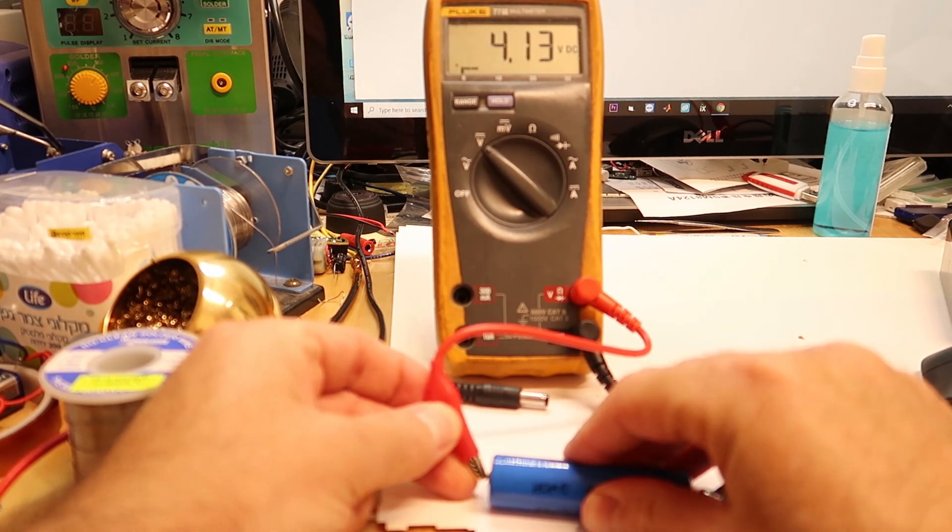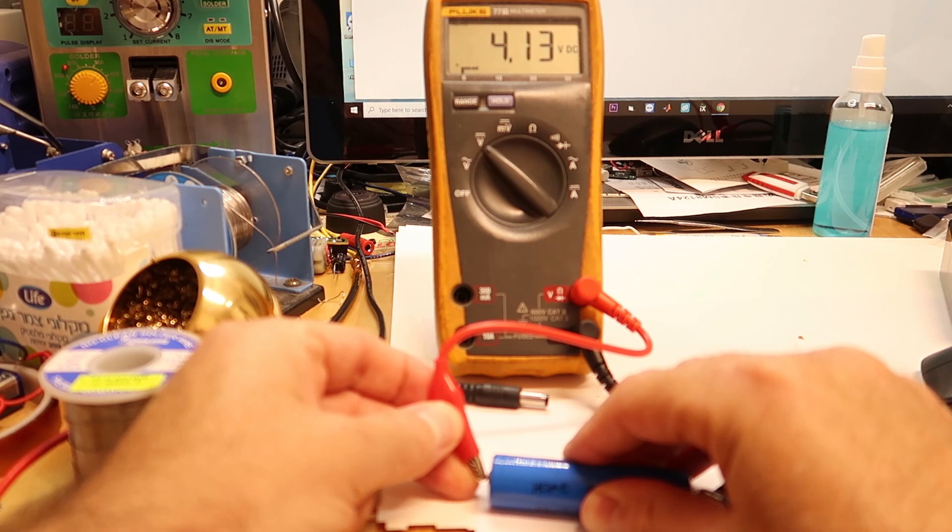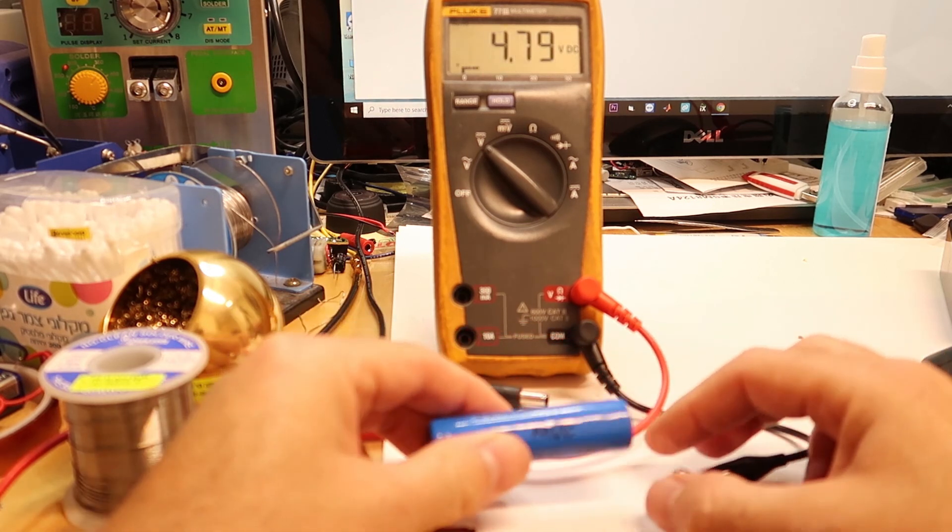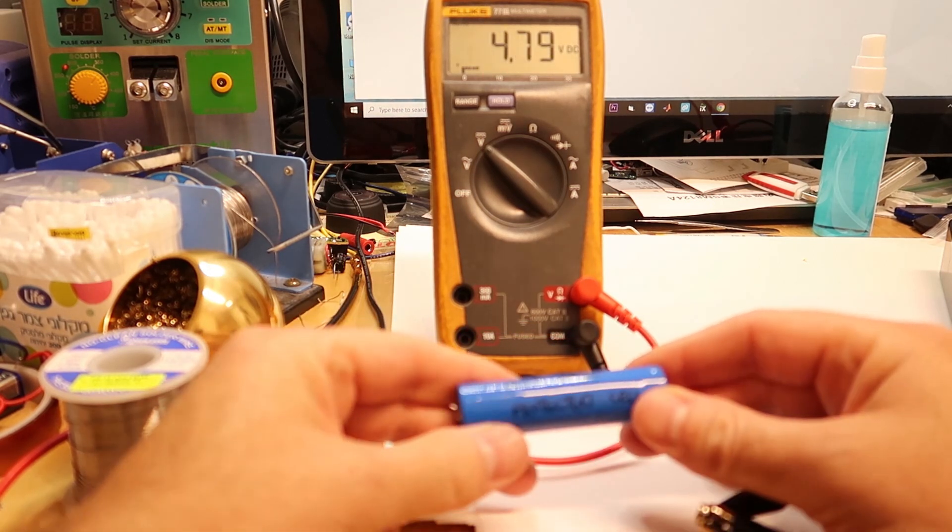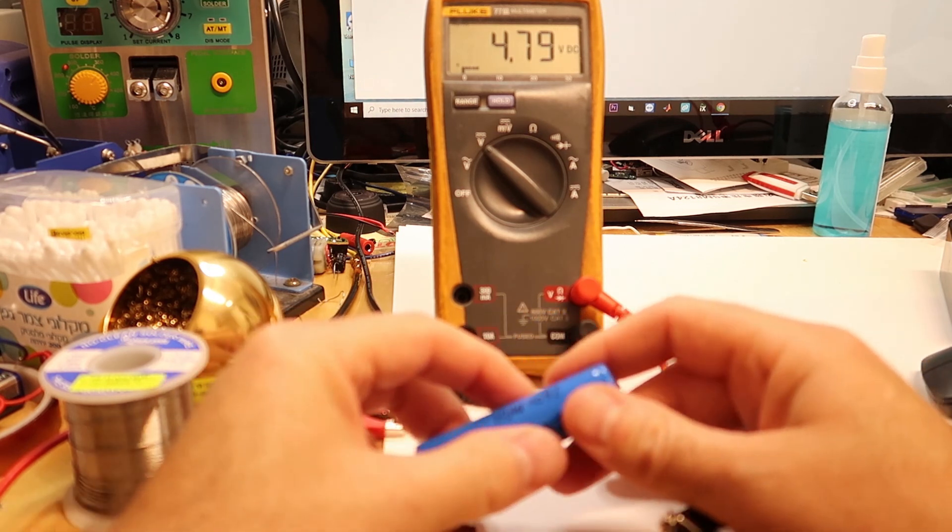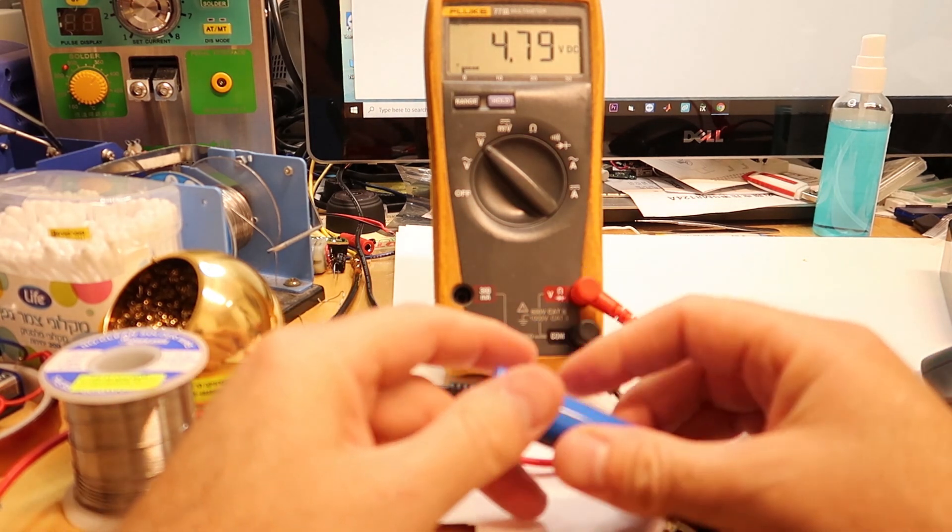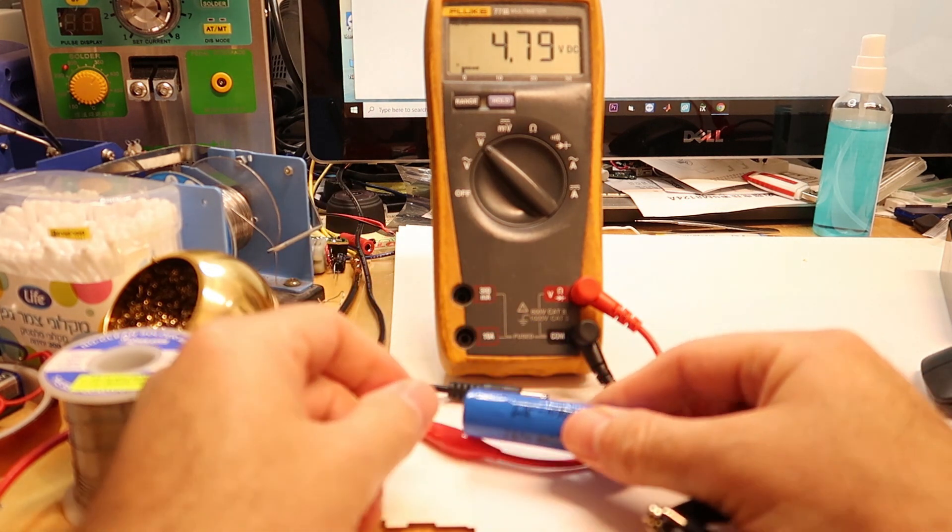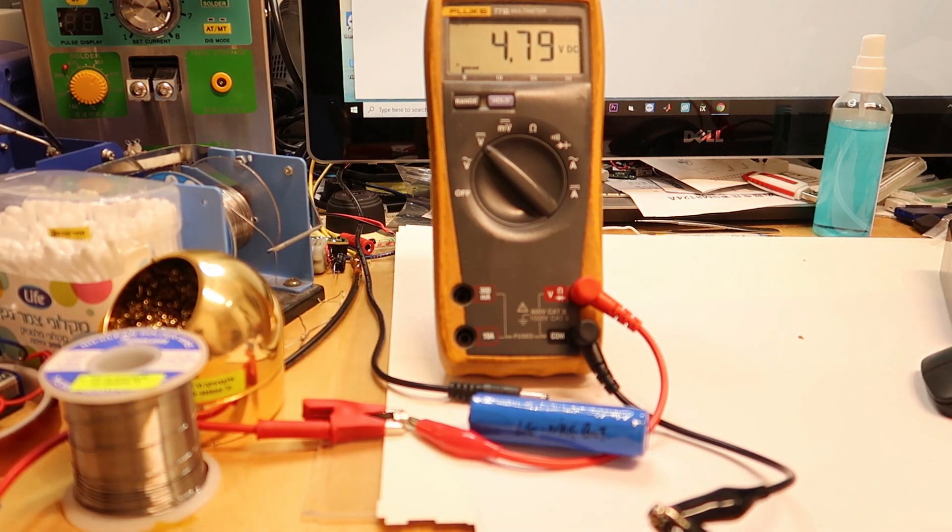And we can see 4.13 volts, so this is within 50 millivolts of 4.2. So it is protecting the circuit from getting the overcharge. So overall this circuit is working perfectly as we've seen and it is safe to use. And that's all, thank you and bye.